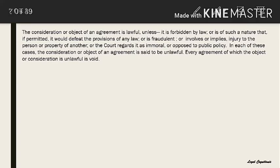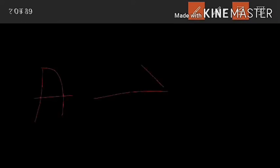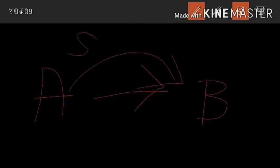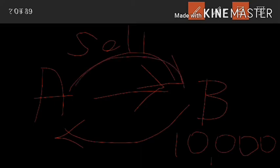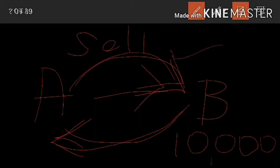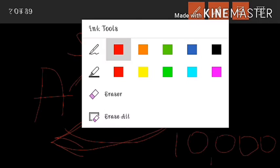Illustration: A agrees to sell a house to B, and B agrees to pay A ₹10,000. Here A's consideration is the sale and B's consideration is ₹10,000. This is a valid contract with lawful consideration.